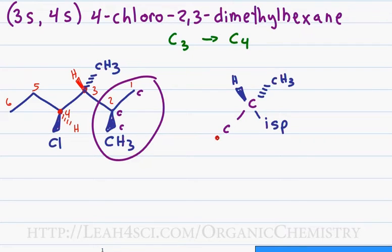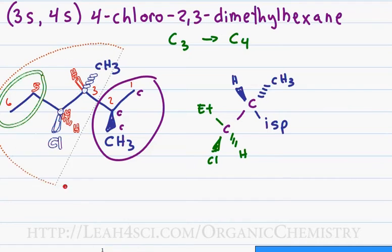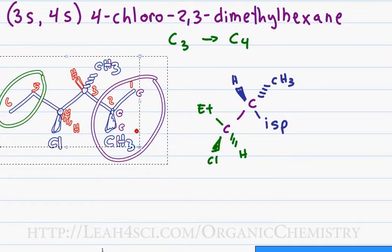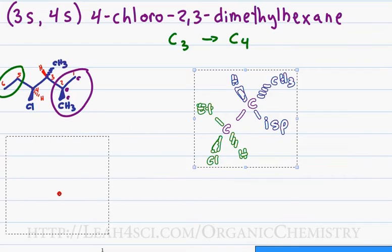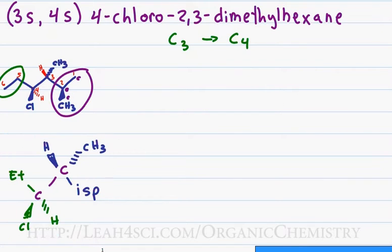For carbon-4, I have a chlorine down to the left and a hydrogen down to the right, and then I have a two-carbon chain which I will simplify by writing ET for ethyl going up. In doing so, I took this ridiculously large and complex molecule and represented it in a very simple way that will allow me to draw my Newman projection.